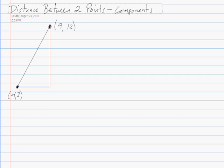What we're going to do first is subtract the x components, so that'll be 4 minus 9, and that's negative 5. So the x component is negative 5.